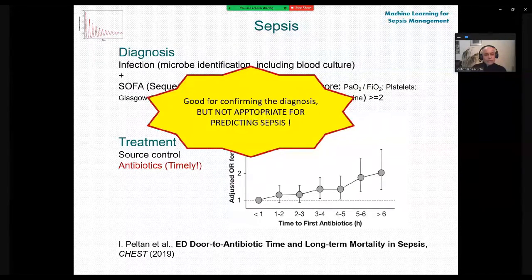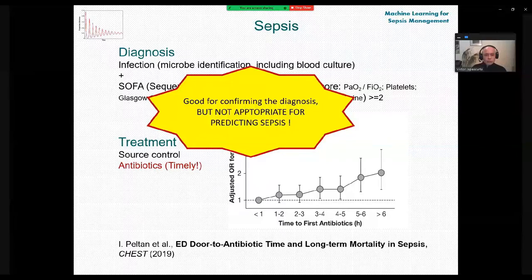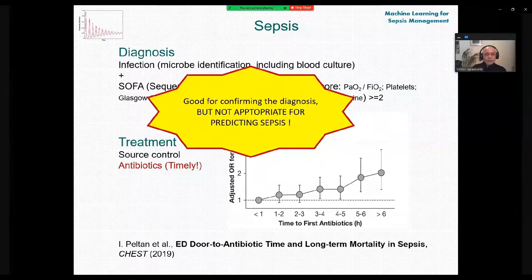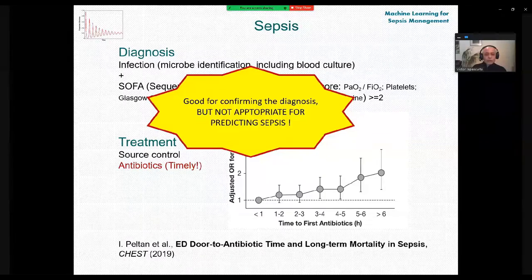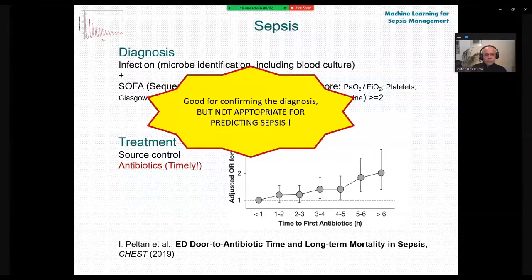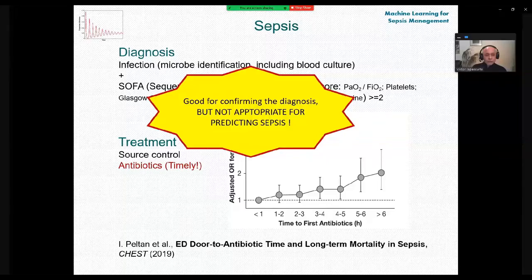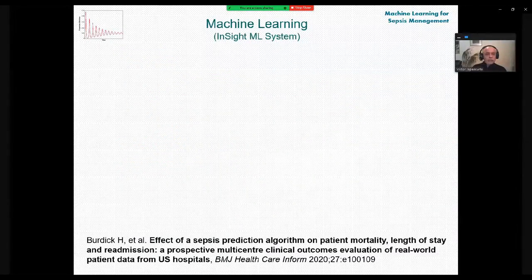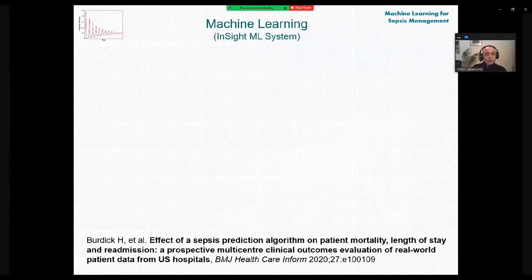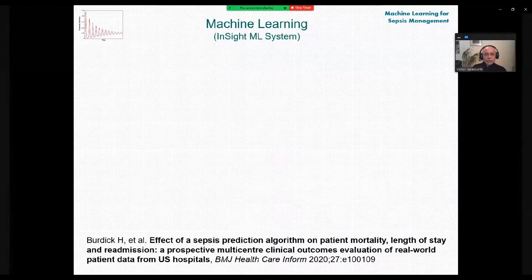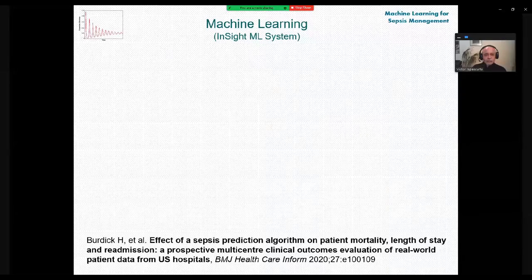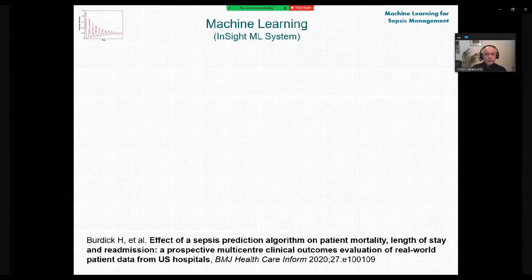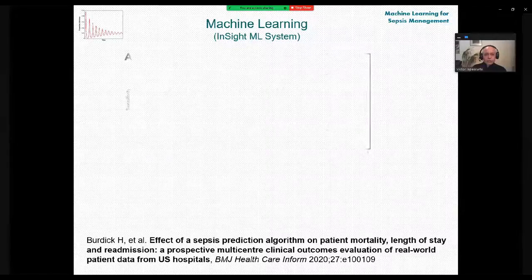Summarizing, we can say that available tools are good for confirming the diagnosis, but they are far not appropriate for predicting sepsis. And this research is designed to cover this gap. Machine learning is being used for addressing this problem recently and I will describe one of the state-of-the-art systems described in the literature.